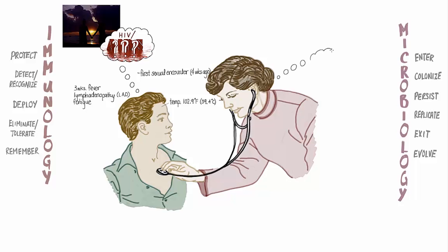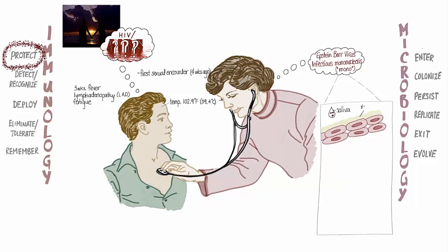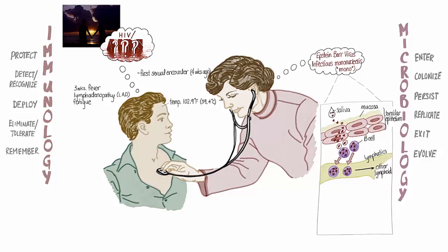When the physician entered the room, she came in with her own set of ideas about what was most likely causing Joel's fever. Many of the college students she saw with this presentation were suffering from an infection with Epstein-Barr virus, which commonly causes infectious mononucleosis, or mono, in young adults. Infection with EBV usually occurs via the oral transfer of saliva. If the virus avoids clearance by the mucosal barriers, it can colonize the epithelium over the tonsils, where it replicates before infecting B cells in the tonsils, which can then leave the tonsils and enter the lymphatic circulation, spreading the virus to other lymphoid tissues.